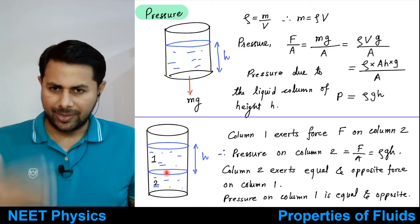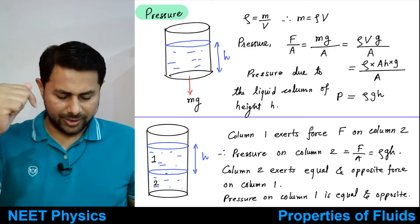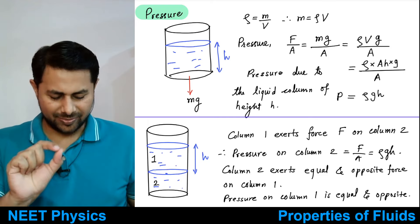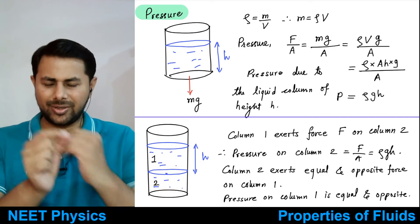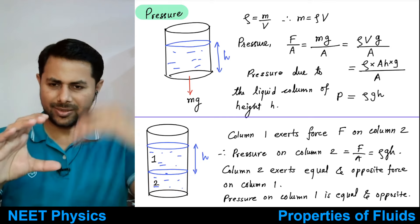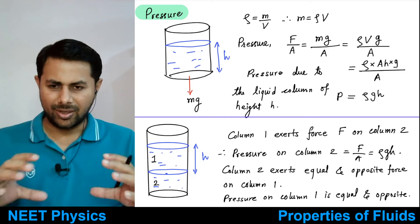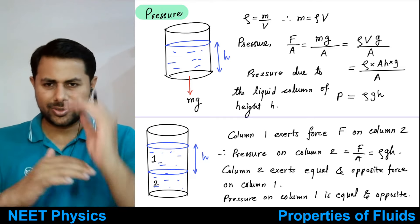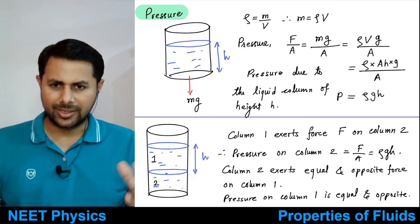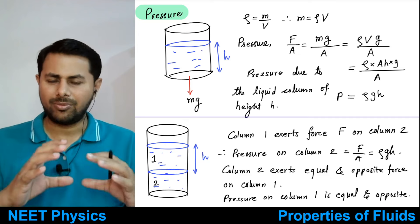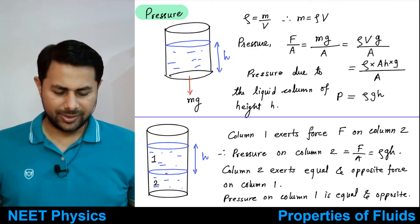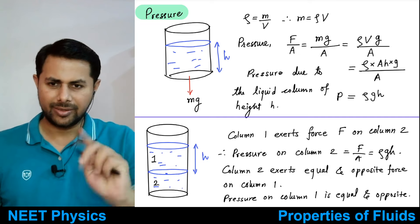If that is a particle of column 2, it is under the pressure due to column 1. If that is a particle of column 1, it is under the pressure due to column 2. Column 1 exerts some pressure or force on column 2; according to Newton's third law, column 2 also exerts equal and opposite force on column 1. So the pressure is not only downwards — pressure is also upwards.